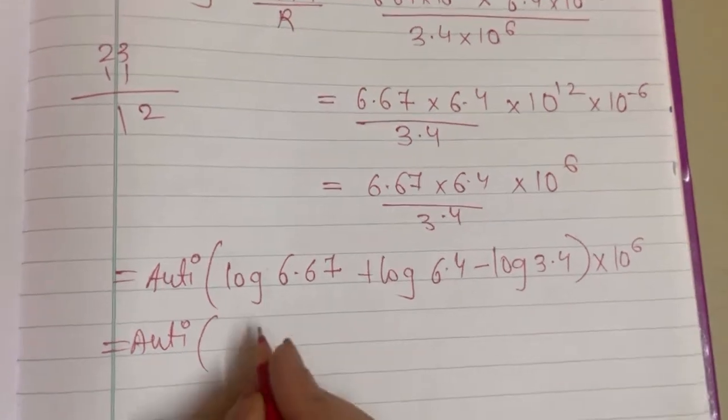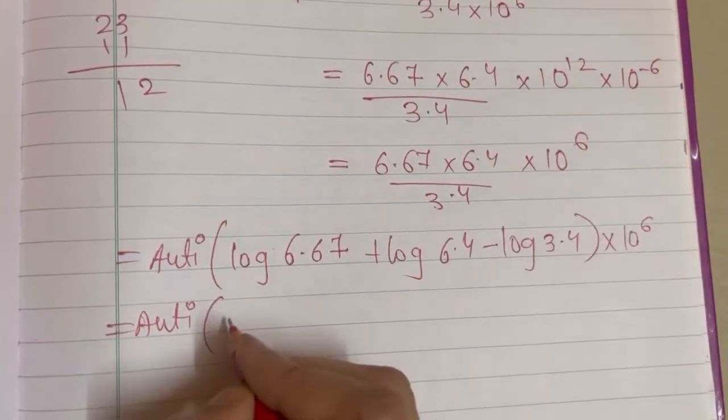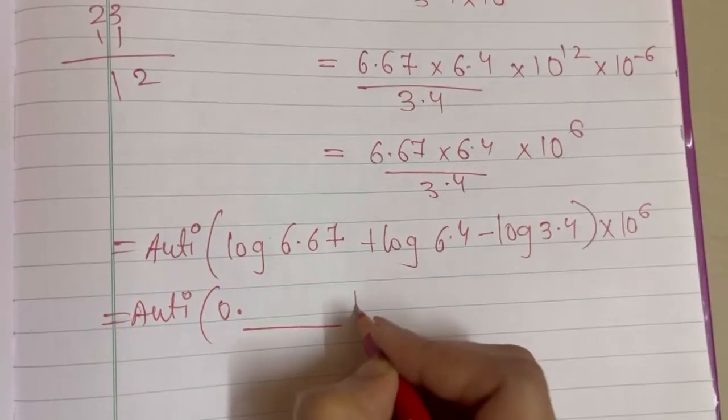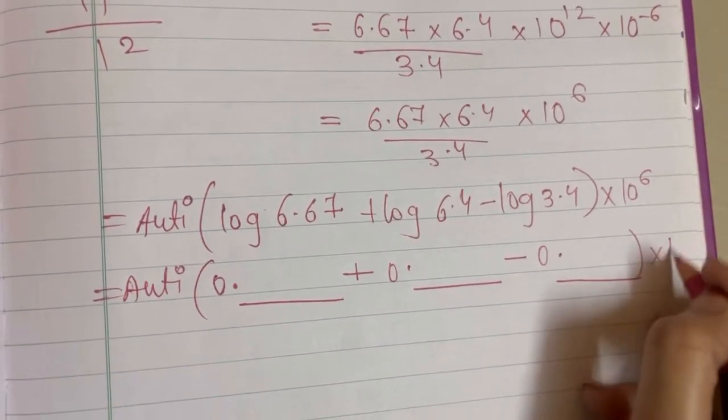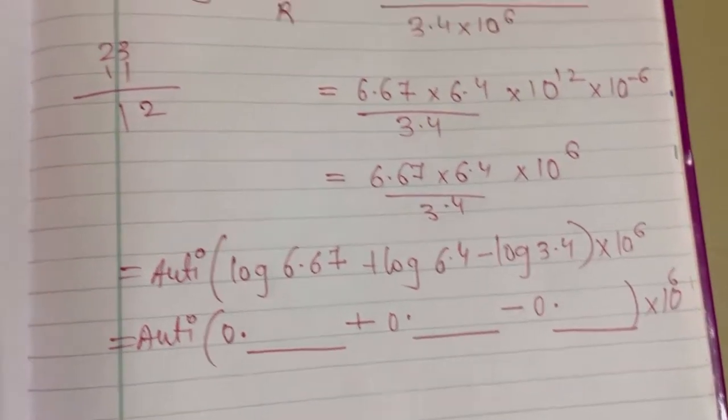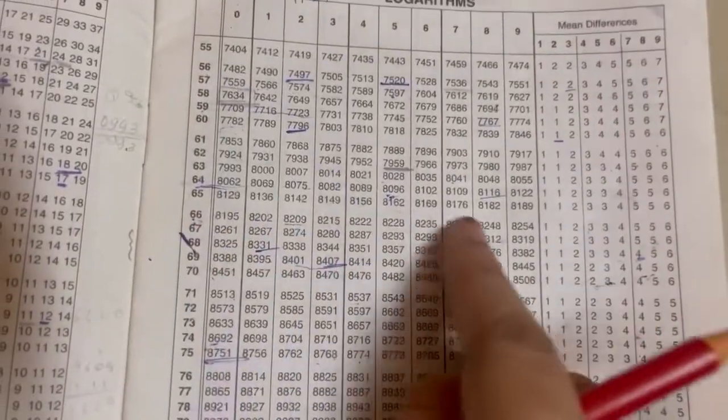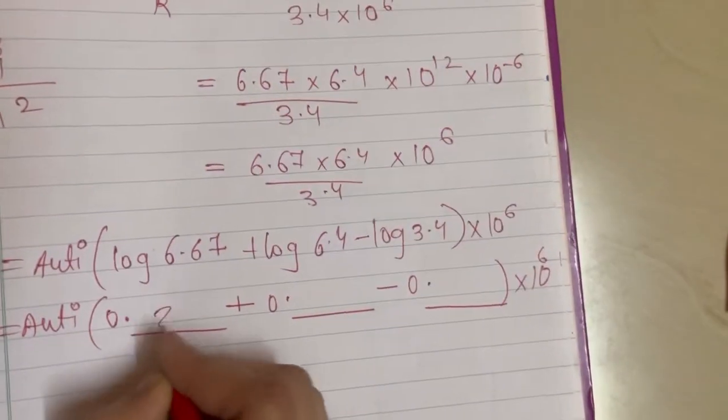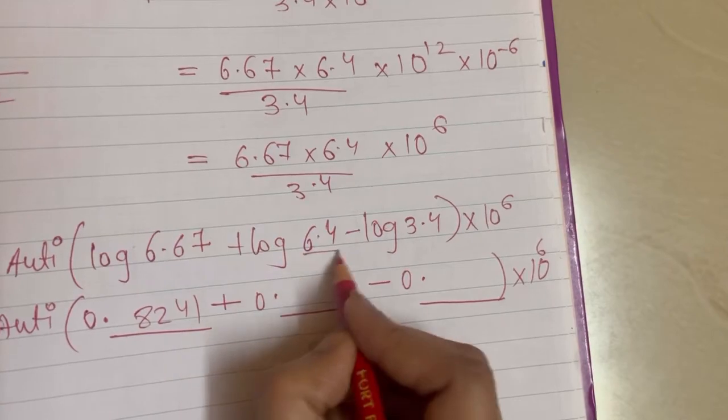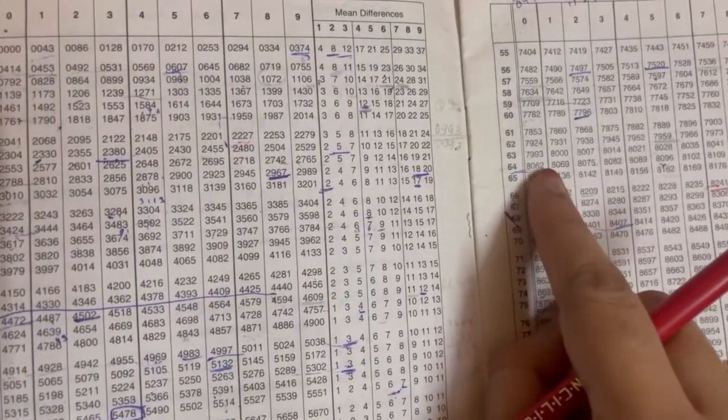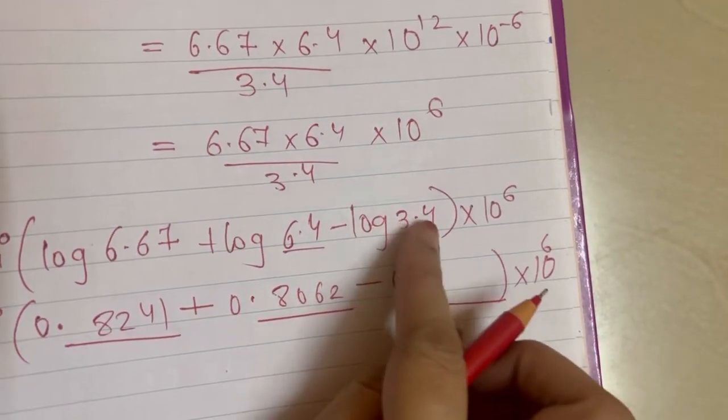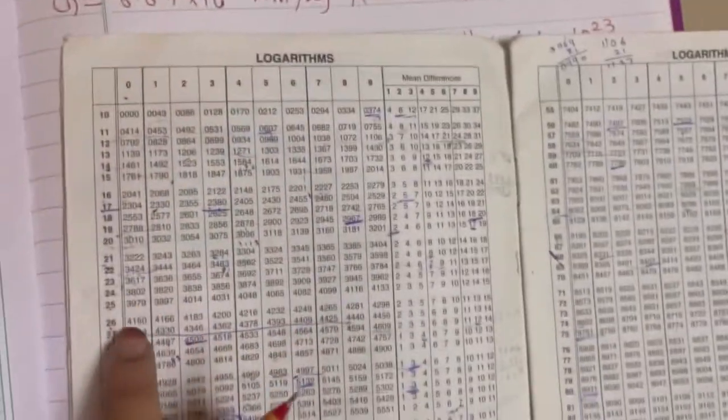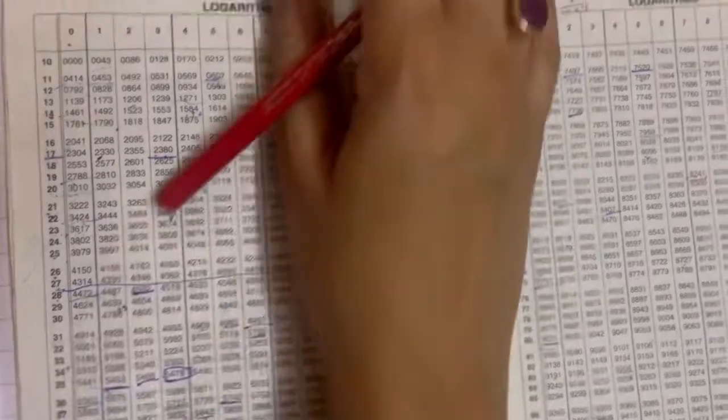Taking log: log(6.67) + log(6.4) - log(3.4) × 10⁶. Since there's one digit before the decimal point, we get 0 point for each. Looking up log values: log 667 is 0.8241, log 64 is 0.8062, and log 34 is 0.5315.